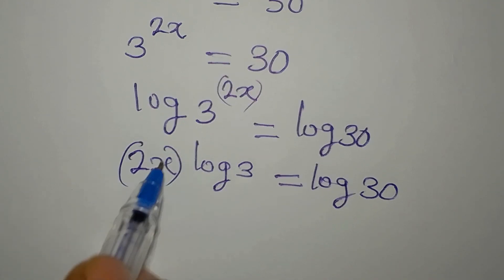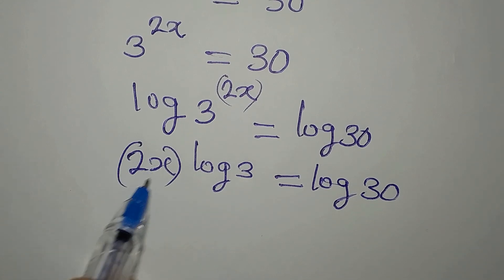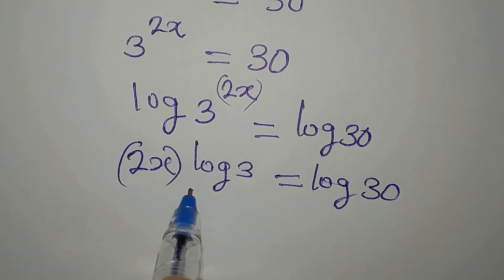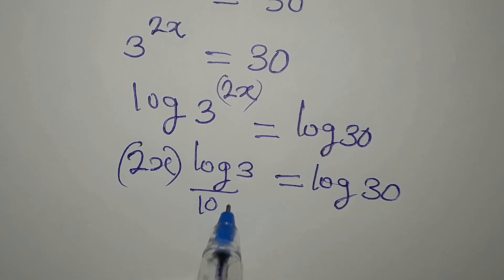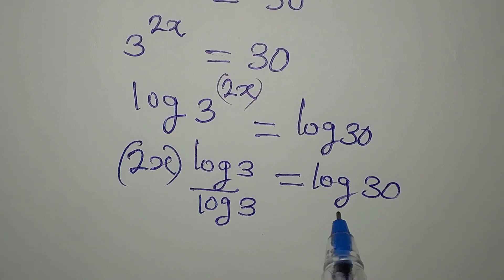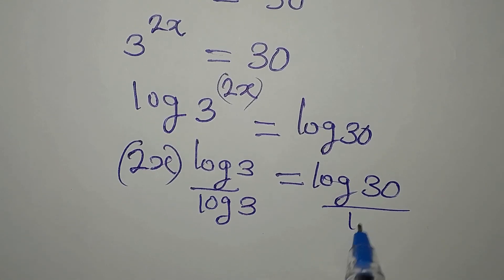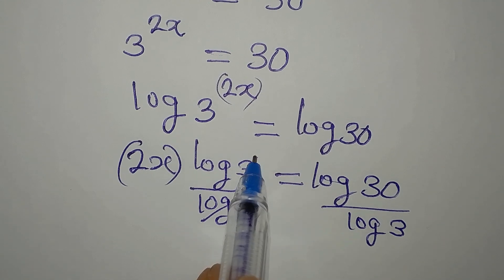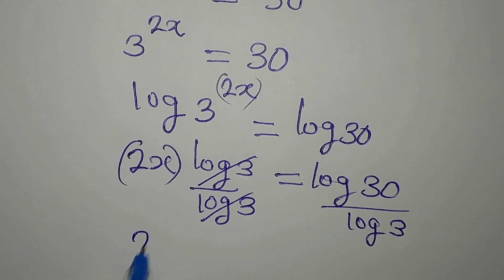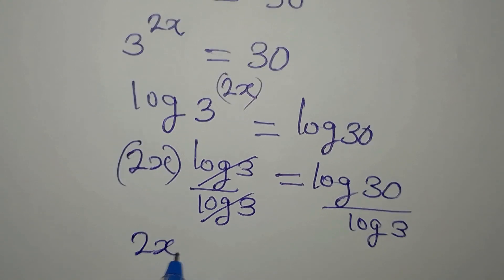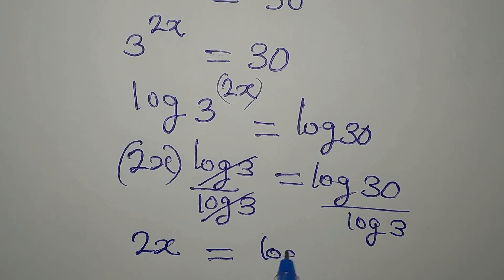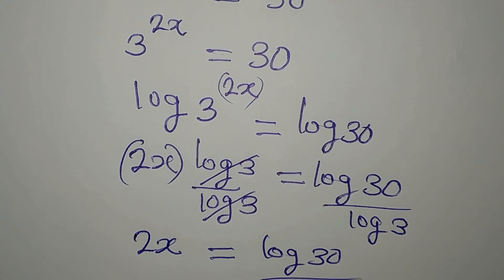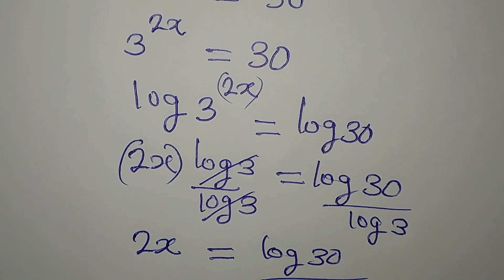From here, we want to make 2x the subject, so we divide both sides by log 3. This cancels, and we have 2x equals log 30 over log 3.